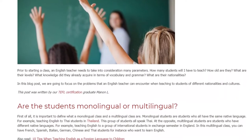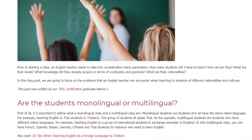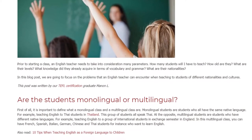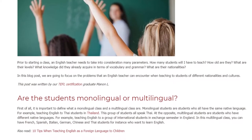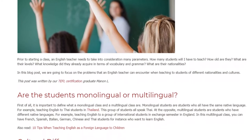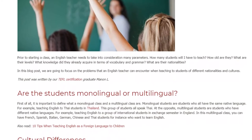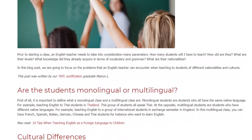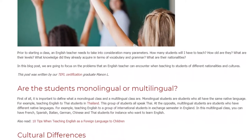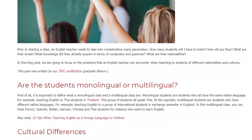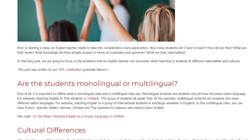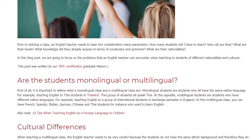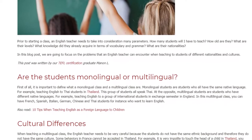First of all, it is important to define what a monolingual class and a multilingual class are. Monolingual students are students who all have the same native language. For example, teaching English to Thai students in Thailand — this group of students all speak Thai.